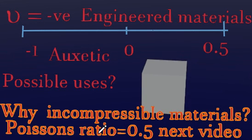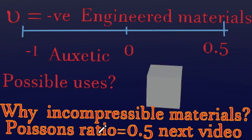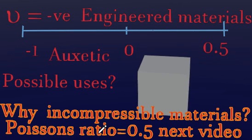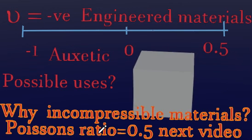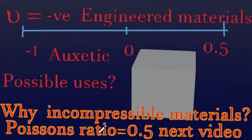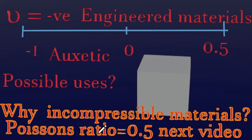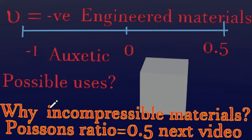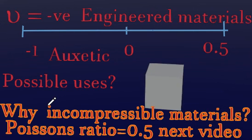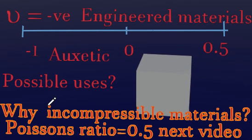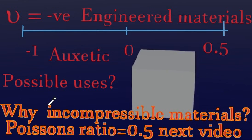Leaving you with one question: what do you think are the possible uses of these auxetic materials? I'd like you to comment in the comment section below. Also, for the next video: why do incompressible materials have a Poisson's ratio of 0.5? That will be the subject of another video if you find this interesting.